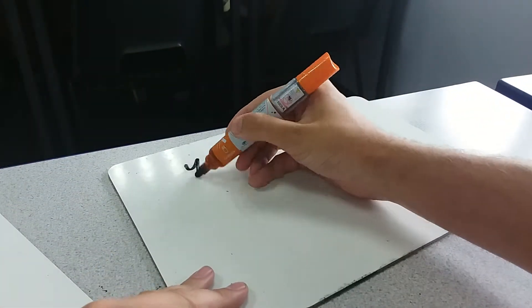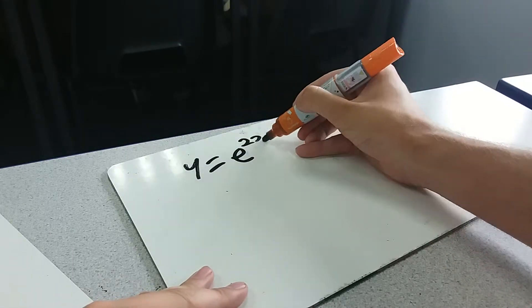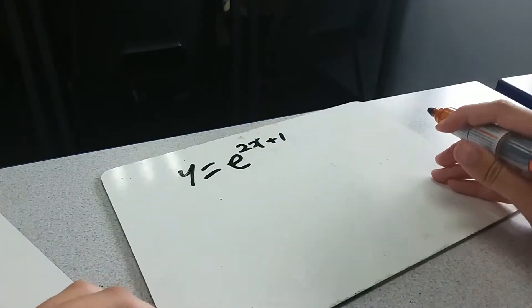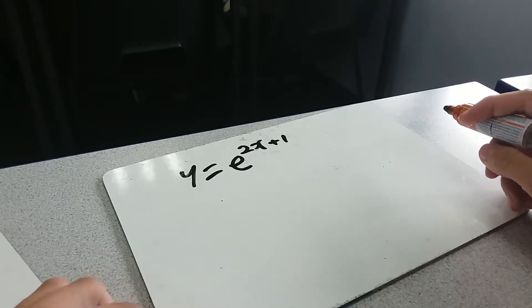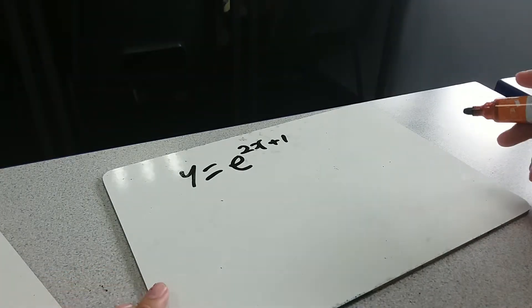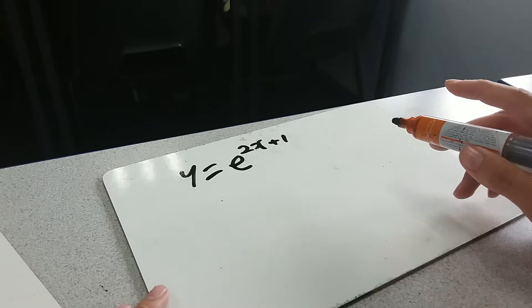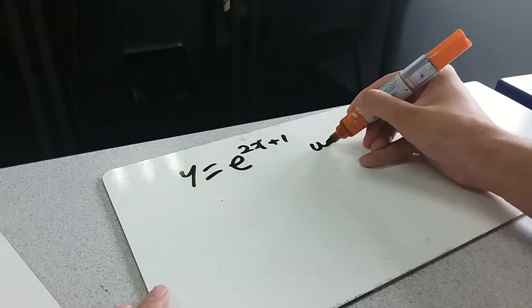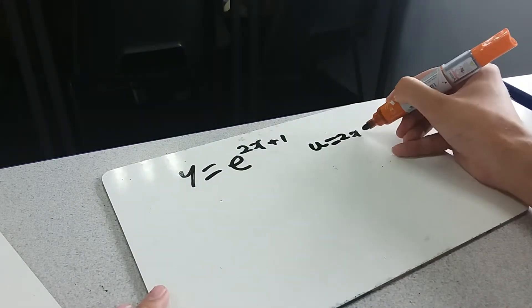Let's say we had y equals e to the 2x plus 1. Now we know what e goes to. If it was just e to the x, it would go to e to the x. Well, let's do a substitution. I'm going to pick the substitution u equals 2x plus 1.